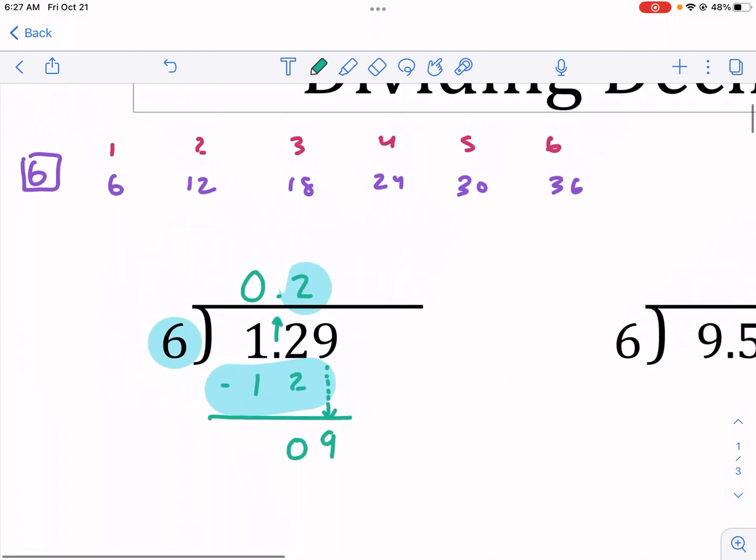Now, I look up here, I think to myself, what times 6 equals 9? And you're going to notice there's nothing, okay? 9's not up here in this, okay? So, what I need to do is I need to go at least as close as I can to it without going over. So, now 6 times 1 equals 6. That's as close as I can get. Not 6. We're going to put 1.